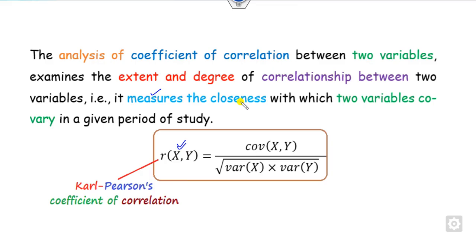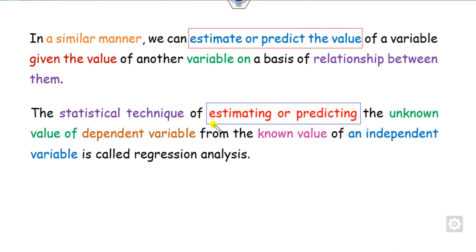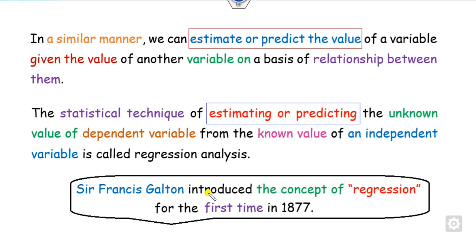For example, if you have two variables x and y and I give x as 43, the corresponding value of y cannot be predicted using the correlation coefficient. So to estimate and predict values, there is a statistical technique called regression analysis. This regression analysis was first introduced in 1877 by Sir Francis Galton.